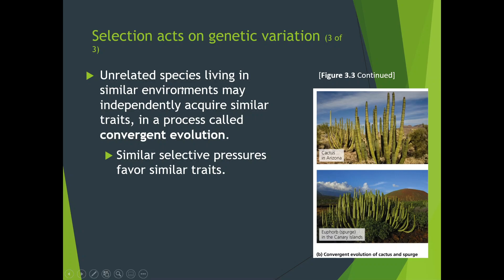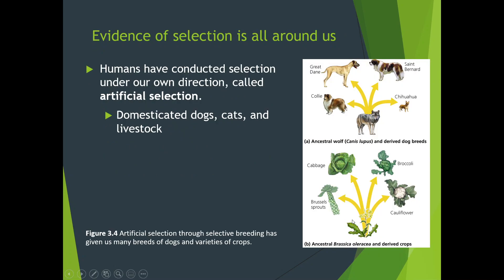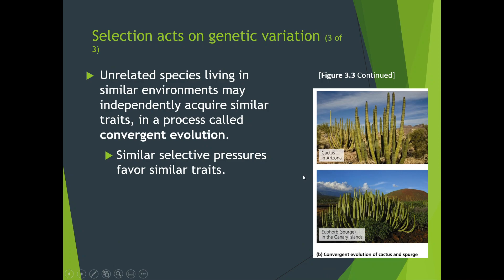Unrelated species living in similar environments may independently acquire similar traits — this is called convergent evolution. For example, two cactus species that never interbred look kind of the same, but one is in the Canary Islands and one is in Arizona. Because their environments were similar, they developed similar traits to get what they needed, but they're not the same species and could not interbreed.